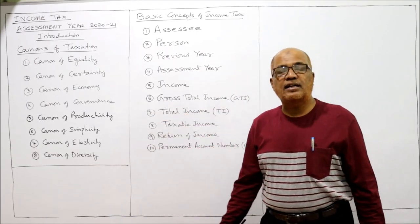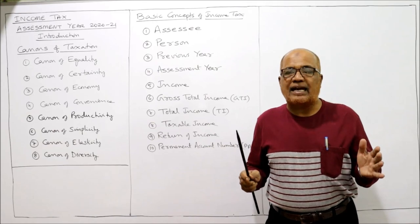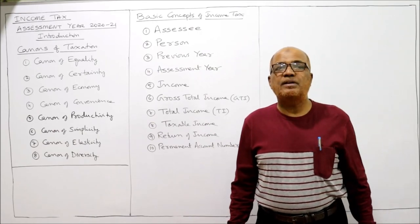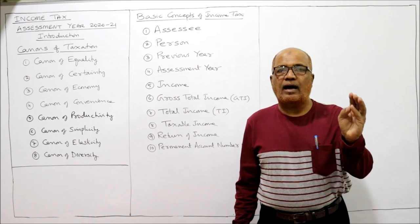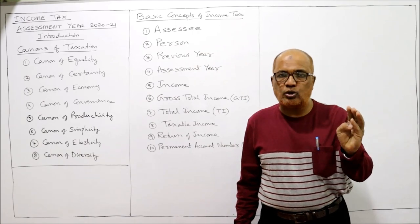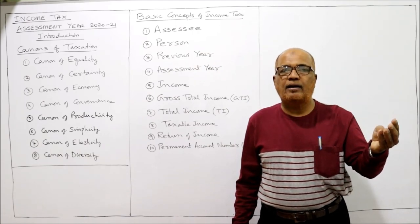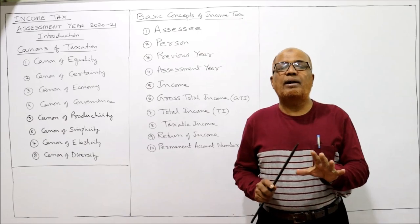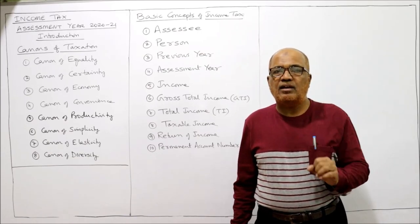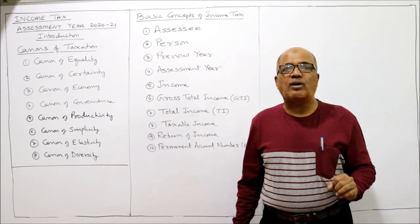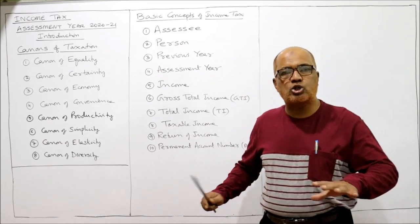The second canon is the canon of certainty. The taxes should be such that the payer is certain about the amount to be paid, the date to be paid, and the form to be paid. All these things should be completely certain. There should be no inconvenience on the part of the taxpayer — it should be clear and well-known.